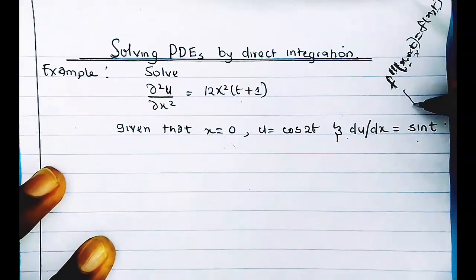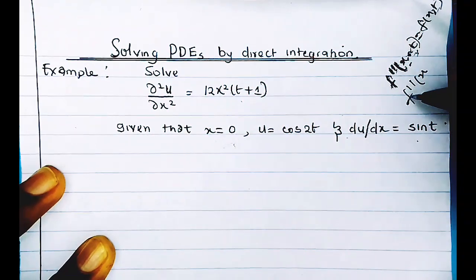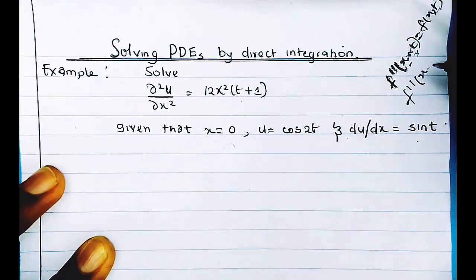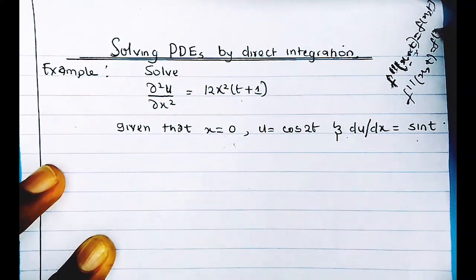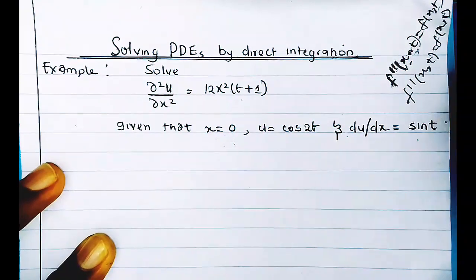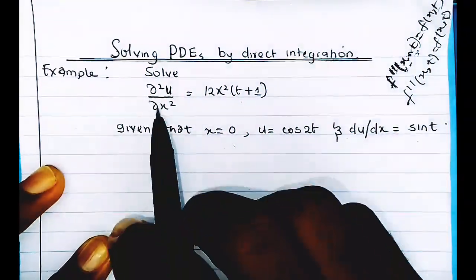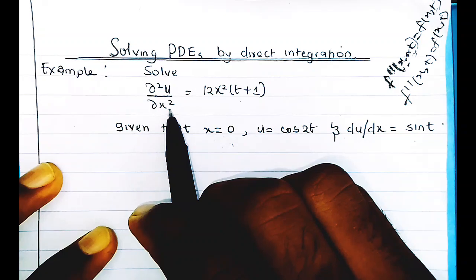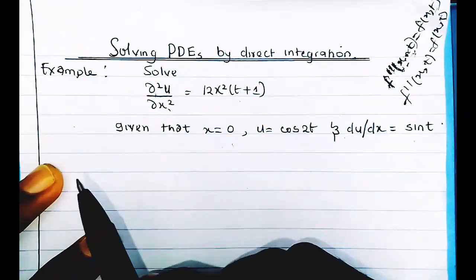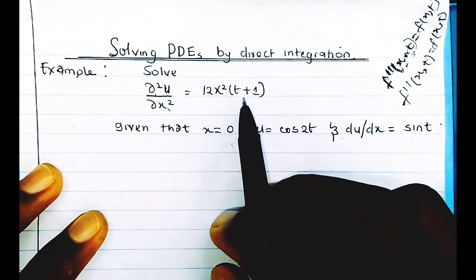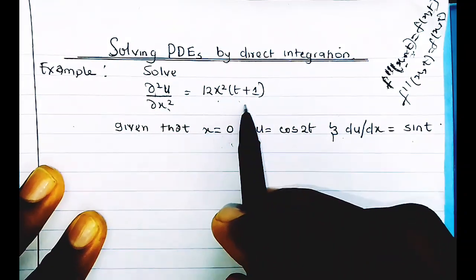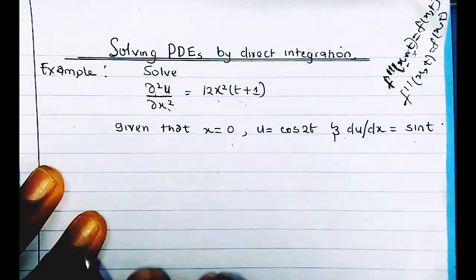To apply direct integration, the derivative of the function of two independent variables, such as x and t, must be equal to a function of those same independent variables. For example, the derivative with respect to x equals 12x² + t². This is a function of both x and t, so we can apply direct integration.